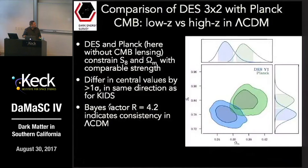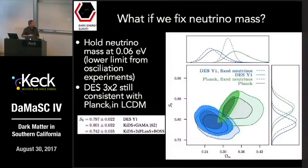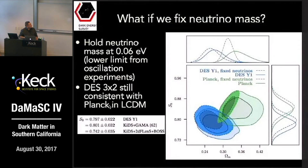Here we show constraining power — DES three-by-two-point, our multi-probe analysis, versus Planck. We see a slight tension in central values, larger than one sigma but nothing really to write home about. This tension has been seen before, for example in the KiDS survey. Importantly, as a low-redshift survey, we have now reached the same constraining power as Planck — though I should mention this is Planck including free neutrino mass. We re-ran the Planck analysis leaving neutrinos free; if you fix neutrinos at the lowest limit, Planck constraints are still tighter. But we have four more years of data to come. We claim DES three-by-two-point is very much consistent with Planck and Lambda CDM.